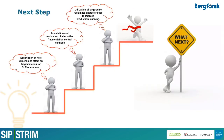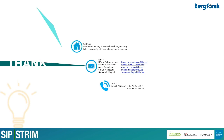These steps will produce a graphical user interface for end users so they can see the rock mass properties and improve production planning. The next steps involve the whole dimension effect on fragmentation, installing and evaluating alternative fragmentation control methods, and utilizing large-scale rock mass characteristics for production planning. The project was supposed to be completed in June this year, but due to initial delays in recruitment of PhD students there is an extension of six months, and we are hoping to achieve these targets by the end of this year. Thank you so much.